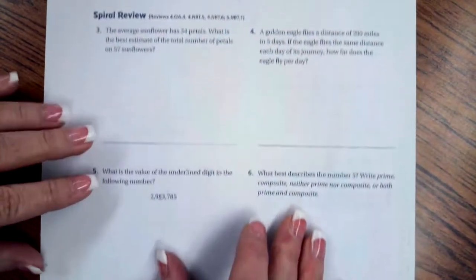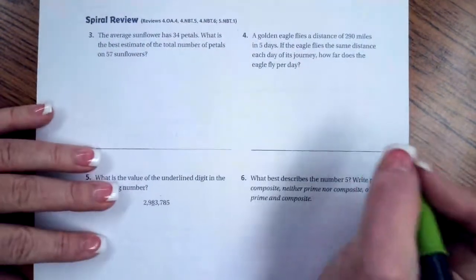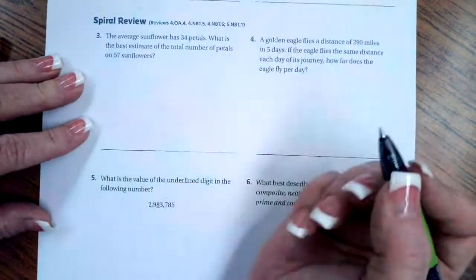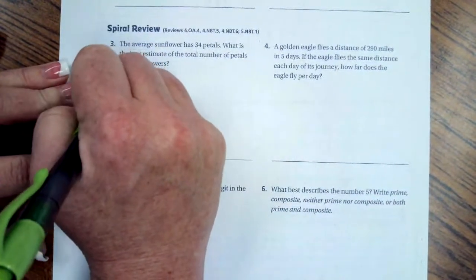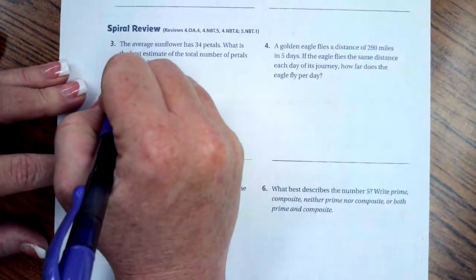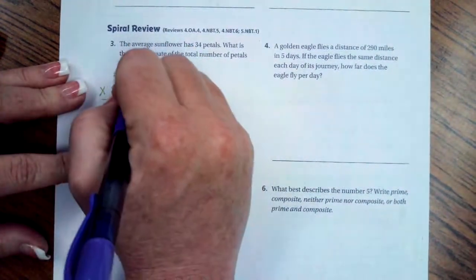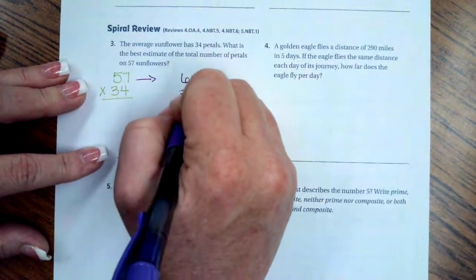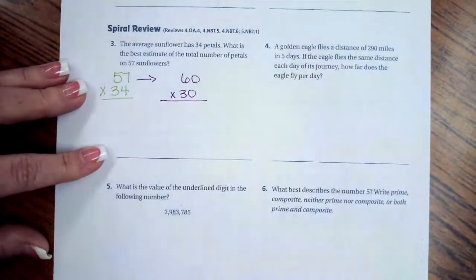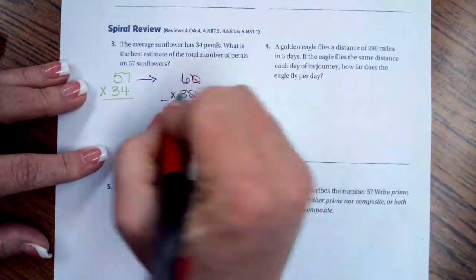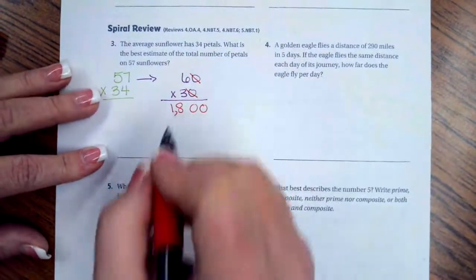We're going to go over onto the back where you guys can do the lesson check. Just like always, we're going to go down and do the spiral review. Spiral review says the average sunflower has 34 petals. What is the best estimate of the total number of petals on 57 flowers? So I have 57 times 34, but we need to round those. So 57, remember if it's five or bigger, then it goes up. So that's going to round to 60 and 34, four is less than five. So it's going to stay 30. Now again, we're multiplying with zeros, which means that I get to take those zeros and just pop them onto the end. And then three times six is 18, 1800 petals.